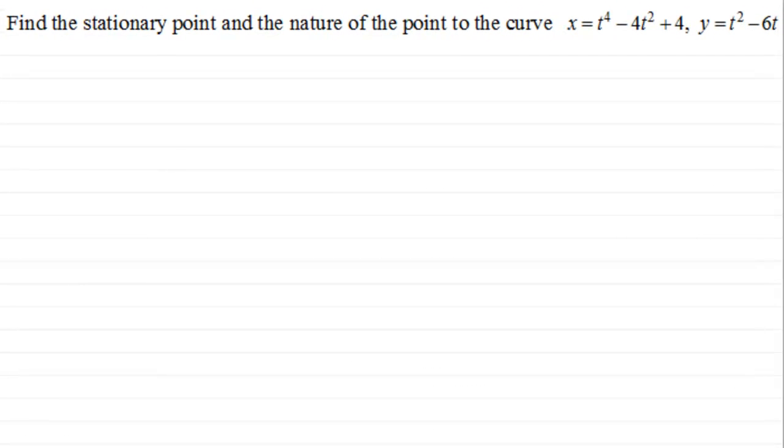Hi, now in this tutorial I want to show you how we can go about finding the stationary point and the nature of a stationary point to a curve which is given in parametric form. We've got this equation here: x equals t to the power 4 minus 4t squared plus 4, and y equals t squared minus 6t.